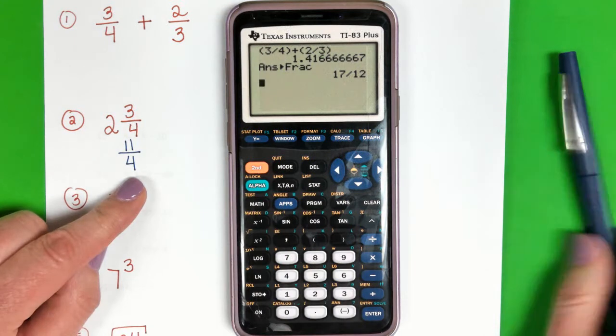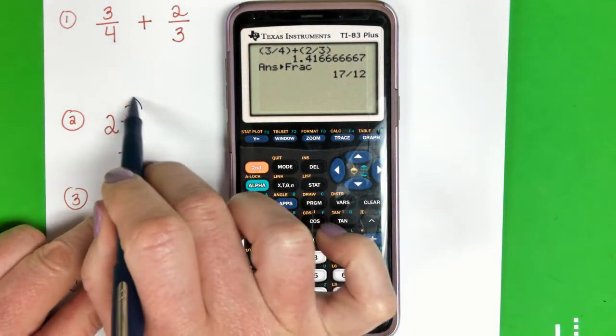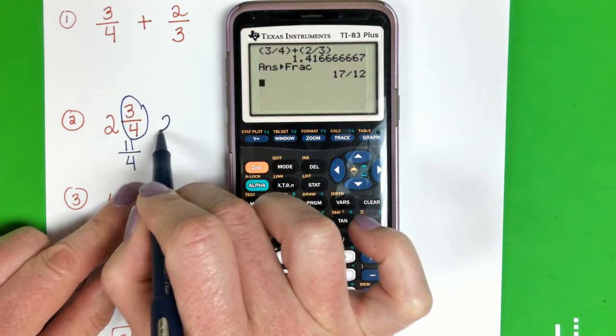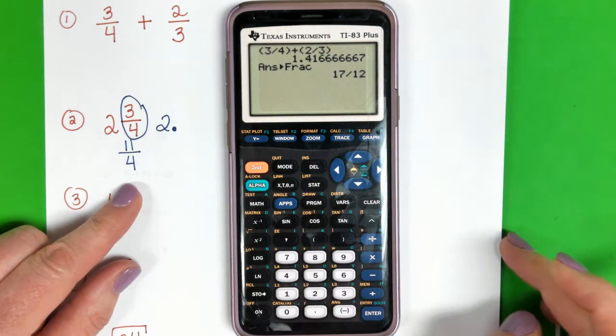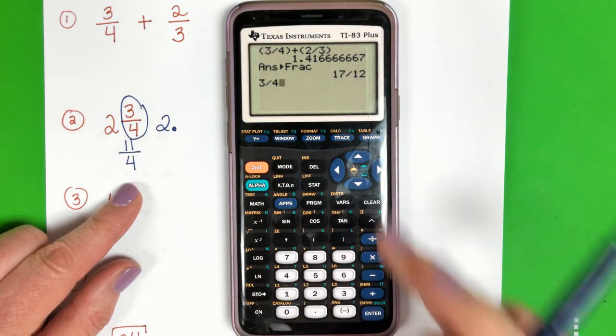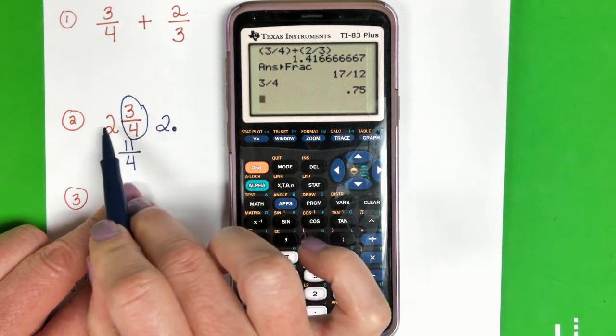So there would be two options that I would suggest. Number one, if you can remember how to change it to an improper fraction, do that. Or I would take the fraction part and I would change it to a decimal. We know this is going to be 2 point something. Or what is 3/4 as a decimal? I'm just going to do 3 divided by 4—it's 0.75.